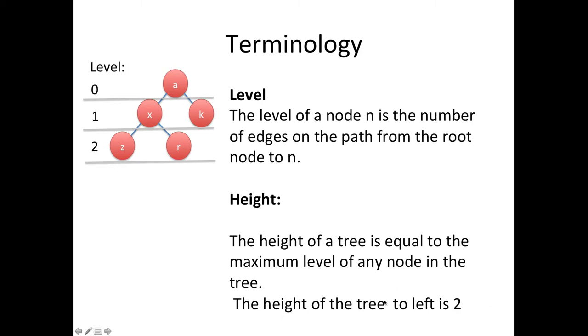Now notice the height is not how many levels there are. There's actually three levels to this tree. The height is technically the last level number. So it's always going to be one less than the number of levels.